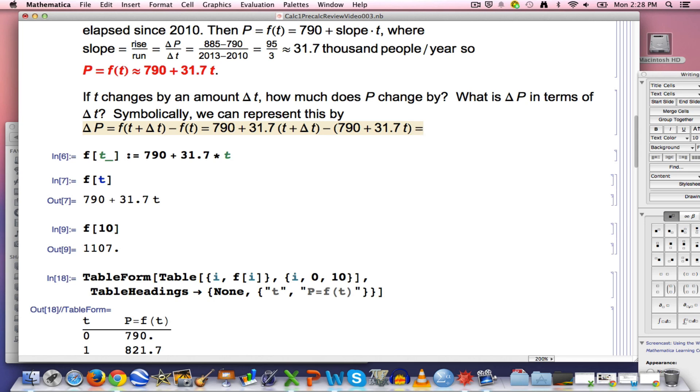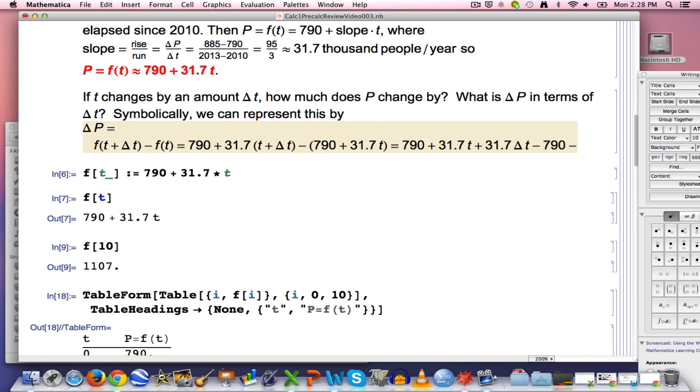This simplifies because of the distributive property. 790 plus 31.7 times T plus 31.7 times delta T. Distribute the minus sign through this parentheses here. Very important to get that right. Minus 790 minus 31.7 T. We get cancellation. 790s cancel and the 31.7 T's cancel. We're left with, at the end here, 31.7 times delta T.